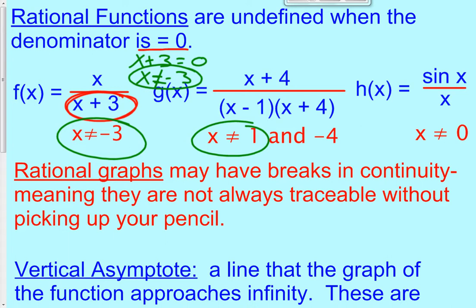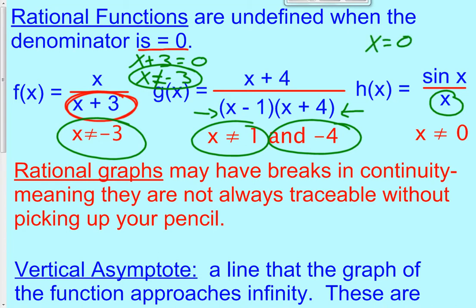That's where we get x cannot equal 1 and x cannot equal negative 4, because these two factors would make 0 if x was 1 or if x was negative 4. And for h of x equals sine of x over x, if x equals 0, you would end up dividing by 0, so x cannot equal 0. The first thing you're going to do is set the denominator equal to 0 to see what x cannot be.